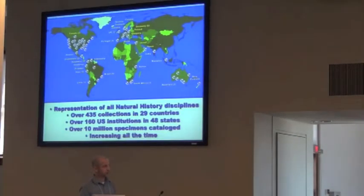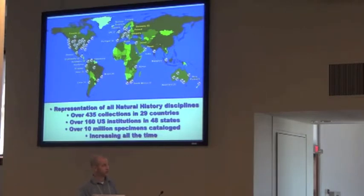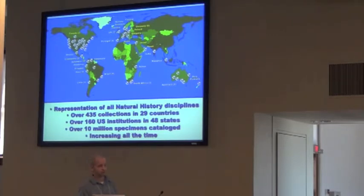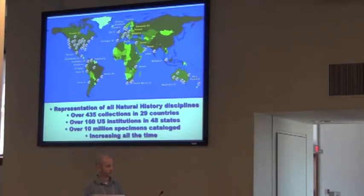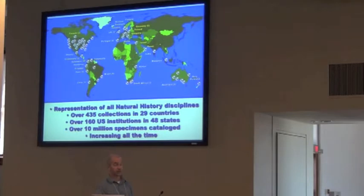We have representation of all natural history disciplines in Specify, from entomology and botany through to all of the paleo disciplines. We have about 135 collections in 25 to 29 countries using Specify, 160 US institutions in 48 states, and we estimate about 10 million specimens catalogued in Specify across all of those collections. Those numbers are obviously increasing all the time as new people and new specimens come in.